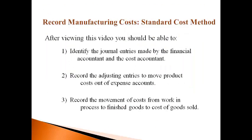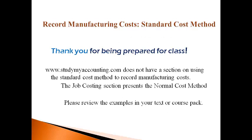After viewing this video, you should be able to identify the journal entries made by the financial accountant and the cost accountant, record the adjusting entries to move product costs out of expense accounts and adjust them to actual, and record the movement of costs from work in process to finished goods to cost of goods sold. StudyMyAccounting.com does not have a section on using the standard cost method to record manufacturing costs. If you are having trouble with manufacturing overhead, you can use the job costing section because the normal cost method is calculated the same way as the standard cost method. Otherwise, please review the examples in your text or your course pack. Thank you for being prepared for class.